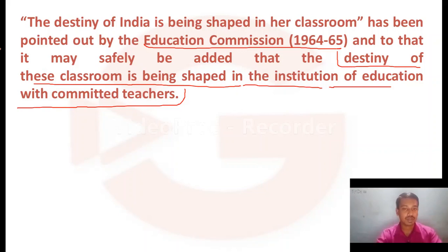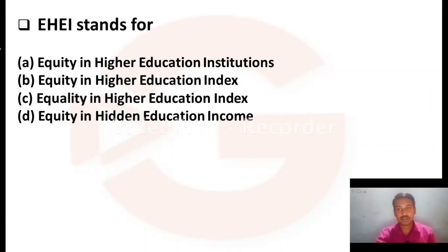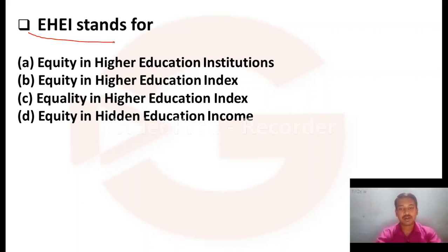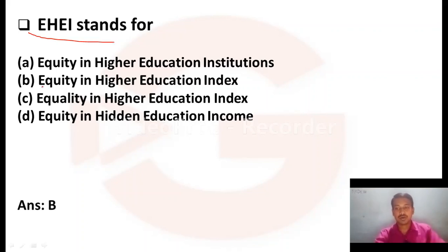Please remember it. Let us go to the next question. EHEI stands for — Option A: Equity in Higher Education Institutions. Option B: Equity in Higher Education Index. Option C: Equality in Higher Education Index. Option D: Equity in Hidden Education. Option B, Equity in Higher Education Index, is the correct answer.